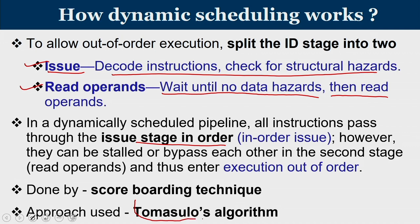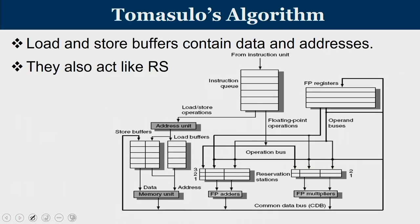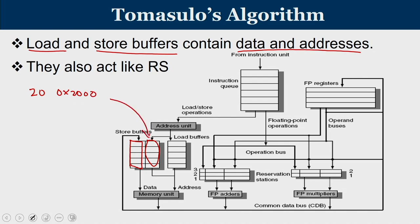In Tomasulo's Algorithm, load and store buffers contain data as well as an address. Store buffers hold the address and the corresponding data to be stored. For example, if we want to store value 20 into address hexadecimal 2000, the address 2000 is stored in the address portion and 20 in the data portion — it acts as a queue. For loading, the value is taken from memory so only the address component is needed. The number of entries for this memory unit can be considered as a reservation station.